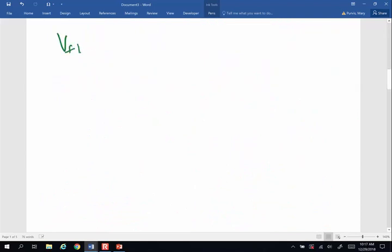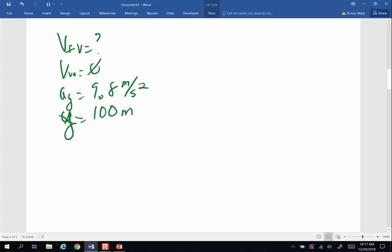So let's go find the final vertical velocity of this object. The original vertical velocity is 0. Gravity is 9.8. It's going to speed it up by the acceleration of gravity. And I know it's going to fall 100 meters downward.